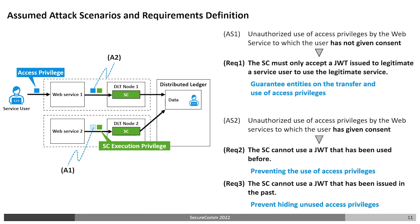For the second scenario, we define that the smart contract cannot use a JWT that has been used before or issued in the past. These are requirements to ensure that the use of access privileges by the service provider originates from the consent of the service user. Even with legitimate access privileges, it is not guaranteed that smart contract execution originates from the service user if the access privileges are allowed to be misused by the service provider.